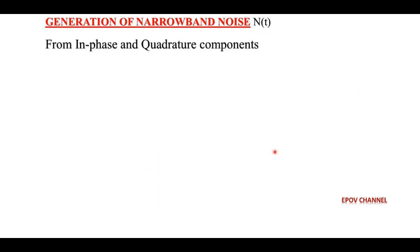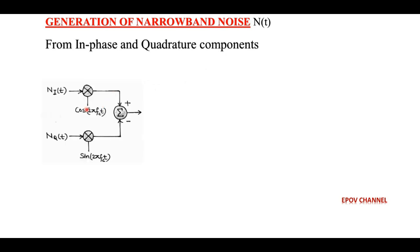Next we discuss the generation of narrowband noise as shown in the figure. The in-phase component ni is first multiplied by cos(2πfct), and the quadrature phase component nq is multiplied by sin(2πfct). They are then added using a summer, taking a negative sign with the quadrature component.